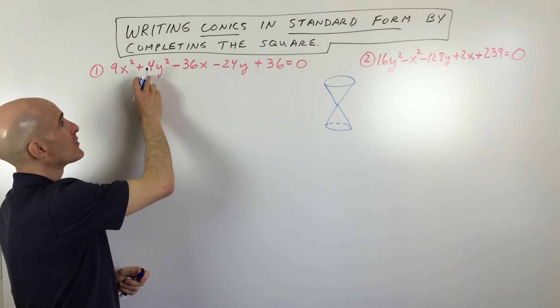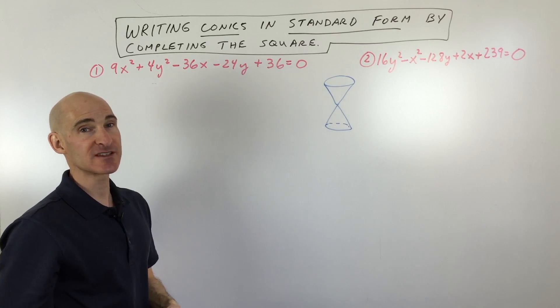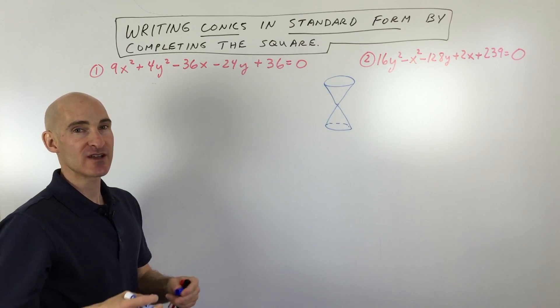It has to be a circle or an ellipse, but because the coefficients in front of the x squared and y squared term are different, but still the same sign, we know it's an ellipse. So that's how you can narrow it down.